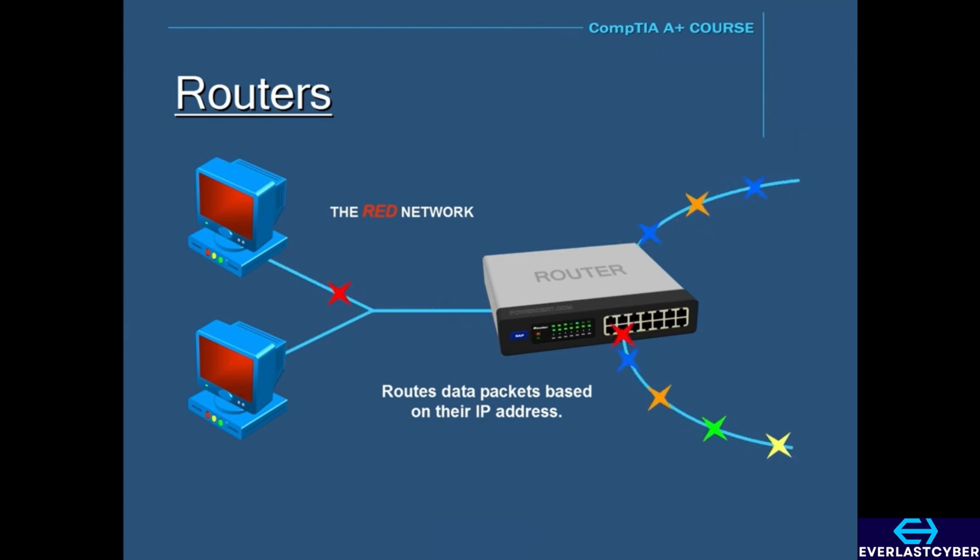So all of the other data packets—the yellows, blues, greens, etc.—will be rejected by this router because they were not intended for this network. This is a very simplified illustration of how a router works, but I think you get the idea.